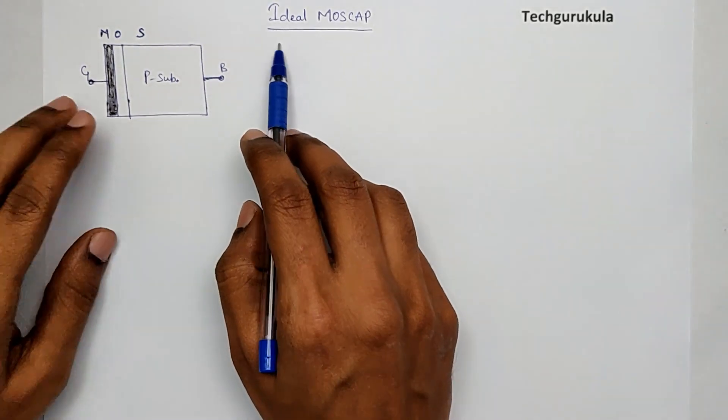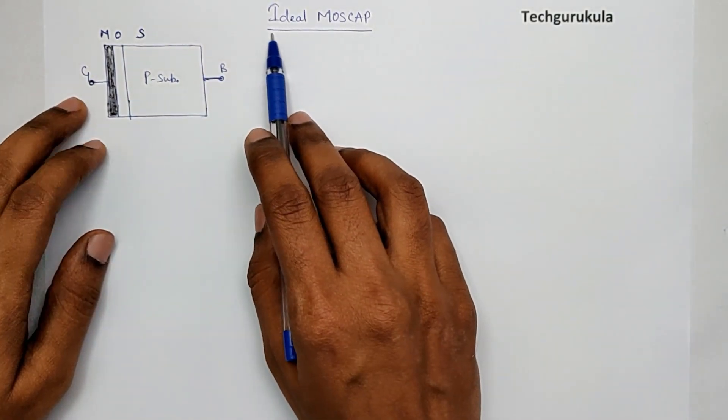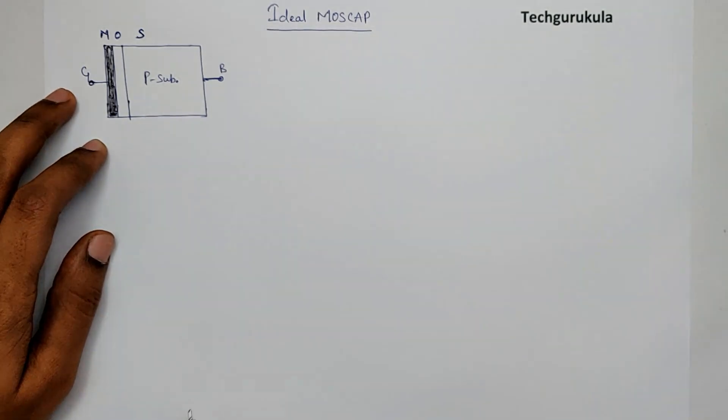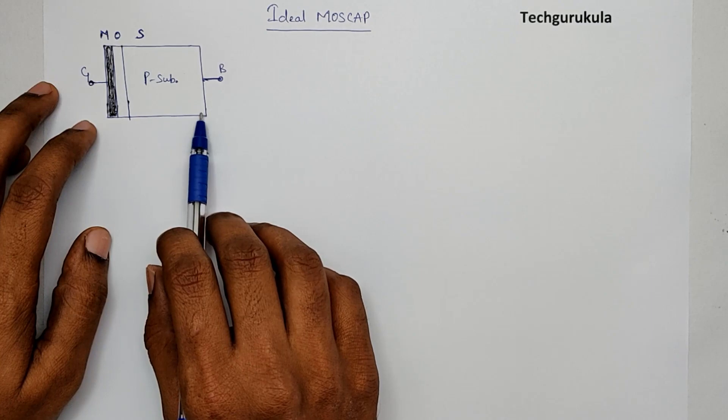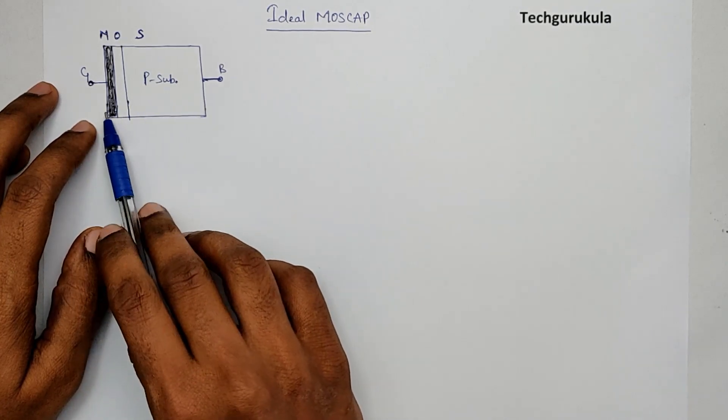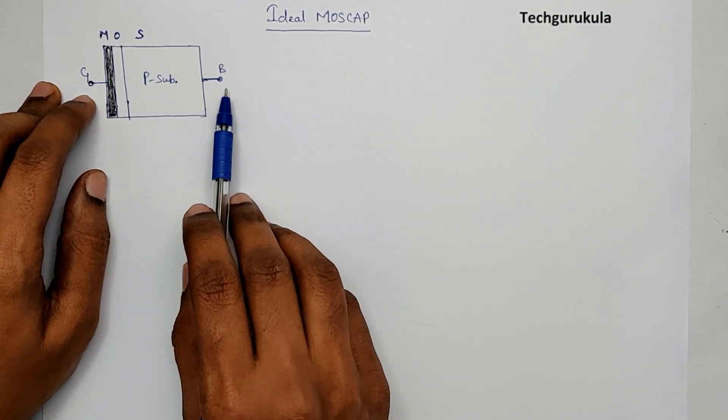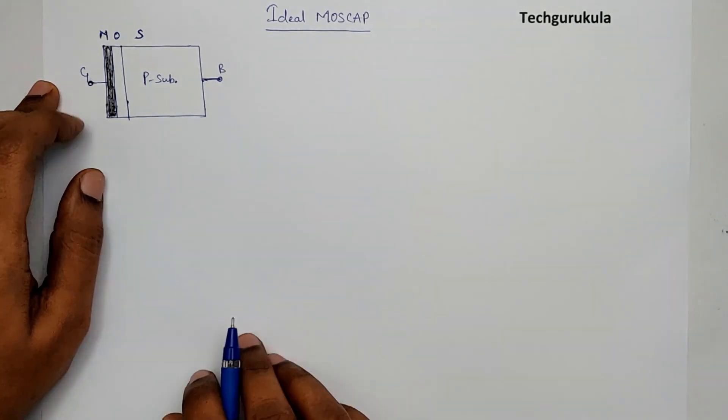In this section, we're going to see what is the definition of an ideal MOSCAP. So if you take a MOSCAP structure like this, as we have always taken, metal oxide semiconductor with gate and bulk or body terminals.